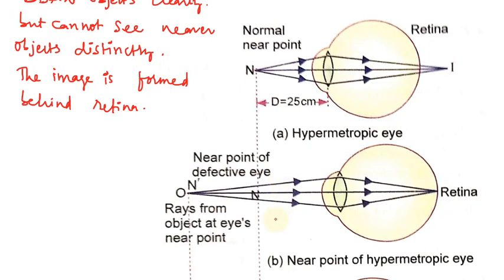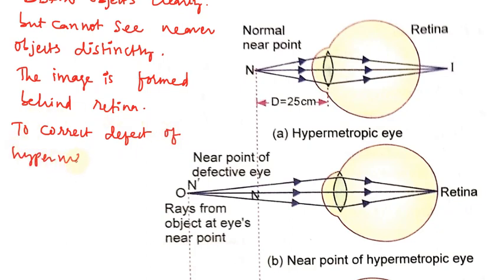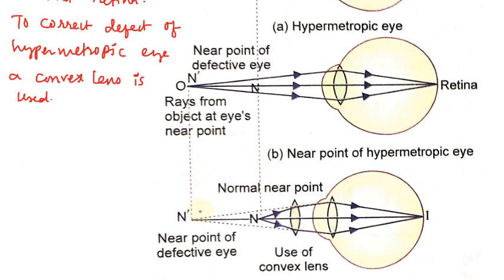Now we need to correct this defect of the hypermetropic eye. To correct this defect, a convex lens is used.